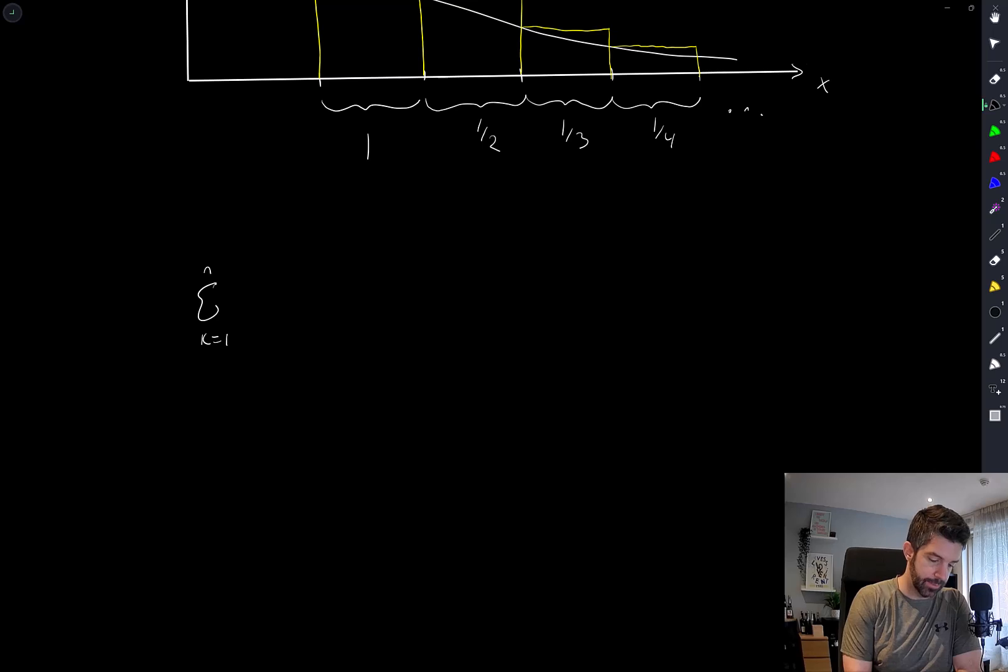And so what this says is that the sum from k=1 to n of 1/k is greater than or equal to - well let's say I guess we can say strictly greater than - the integral from 1 to n of 1/x dx. But this is equal to the logarithm of x evaluated at 1 and n, which is equal to log(n).